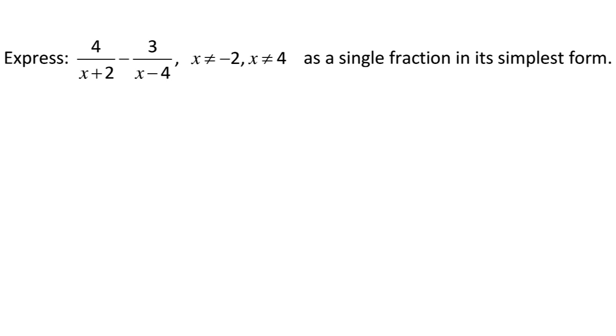And remember, as we get this, x is not equal to negative 2 and x is not equal to 4. The reason that sometimes we have this included is because if x was negative 2, then this denominator would become 0, and if x was 4, then this denominator would become 0. You can't have that. So all this is telling us is that x is a number, but the number is not negative 2 and not 4.